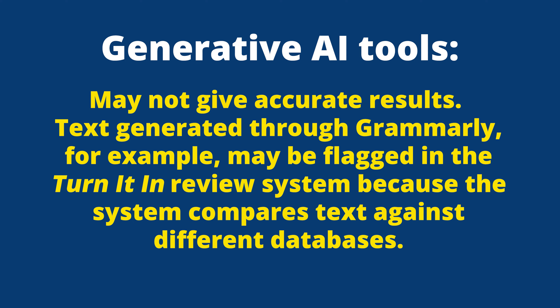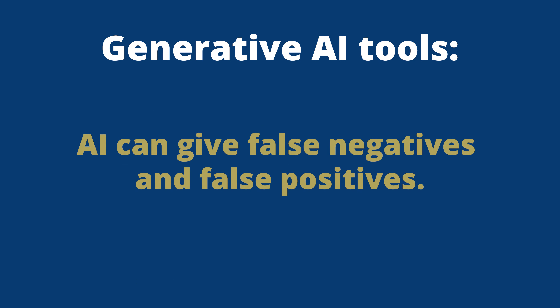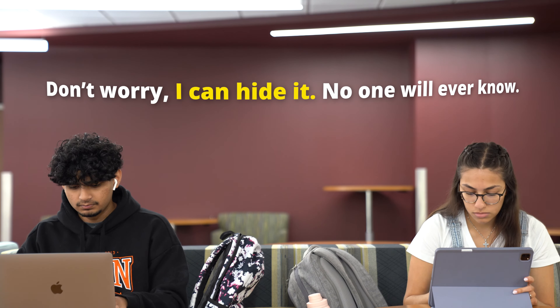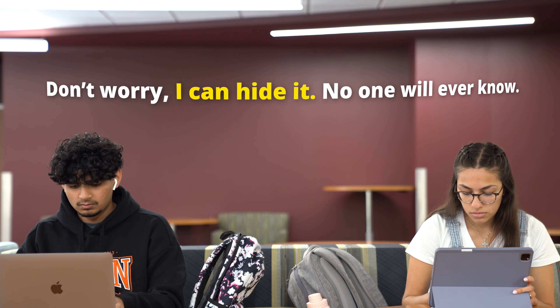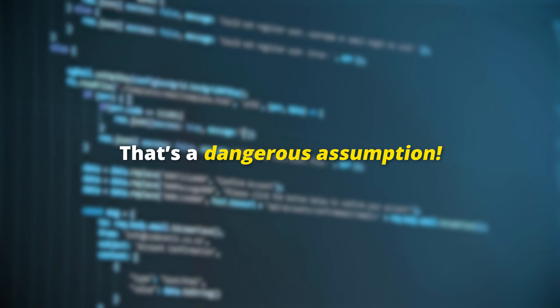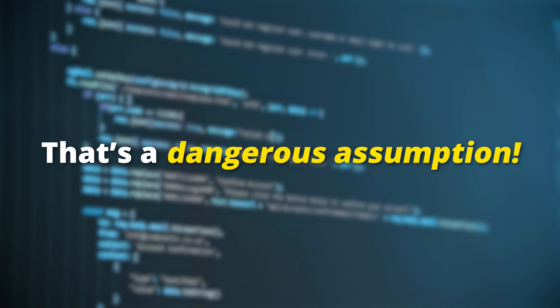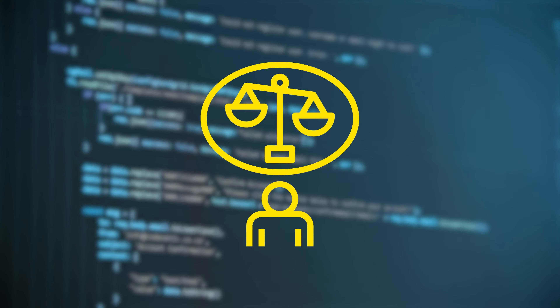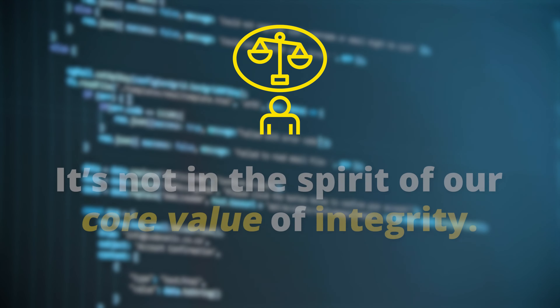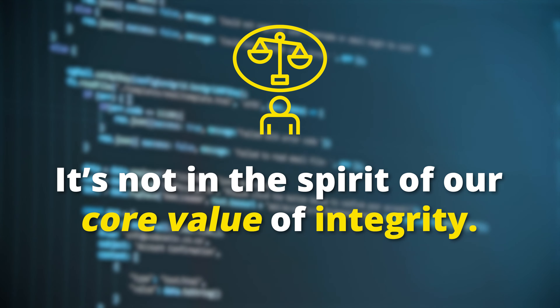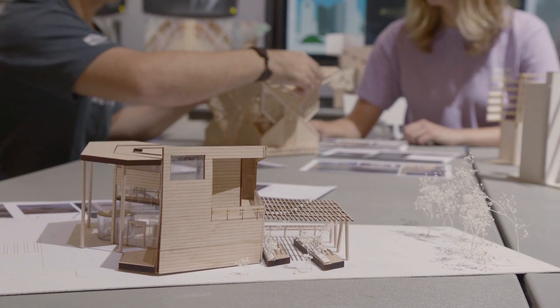Text generated through Grammarly, for example, may be flagged in the Turnitin review system because the system compares text against different databases. AI can give false negatives and false positives. Are you thinking, don't worry, I can hide it, no one will ever know? The truth is, that's a dangerous assumption and can lead to violations of academic integrity.